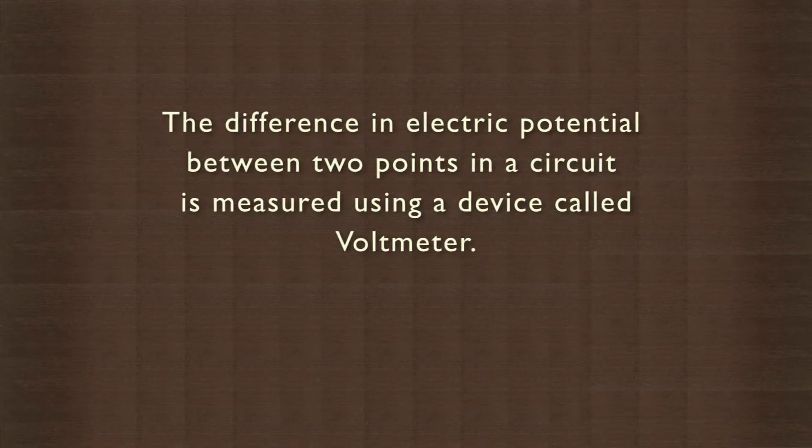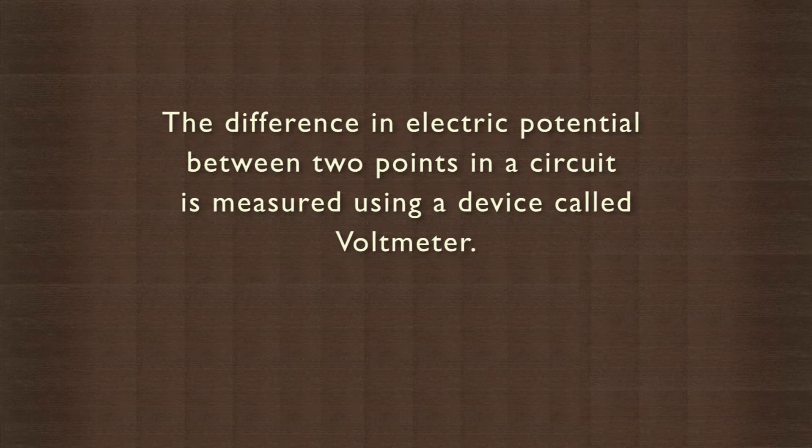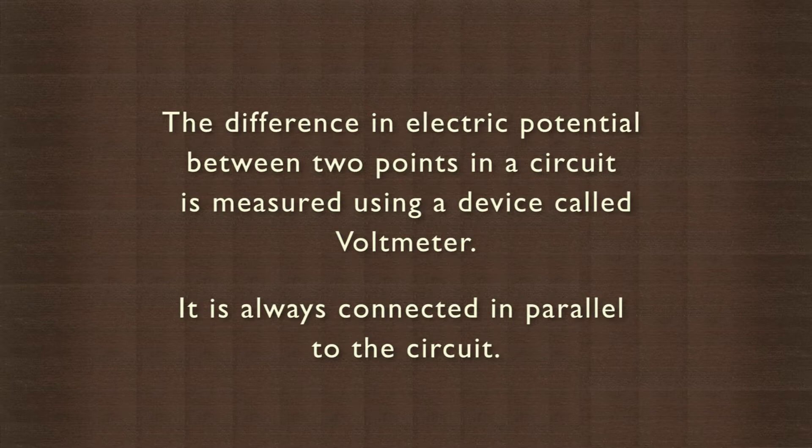Do you know what makes the current flow from one point to another in an electric field? It is because of the electric potential difference between the two points in the circuit. The difference in electric potential between two points in a circuit is measured using a device called a voltmeter. It is always connected in parallel to the circuit.